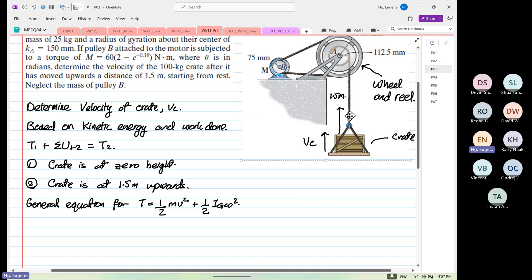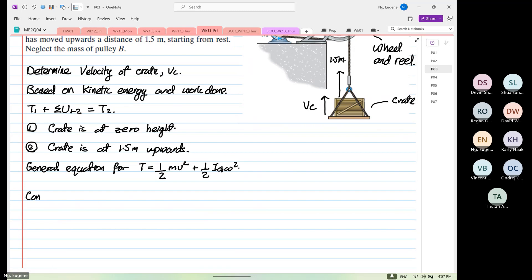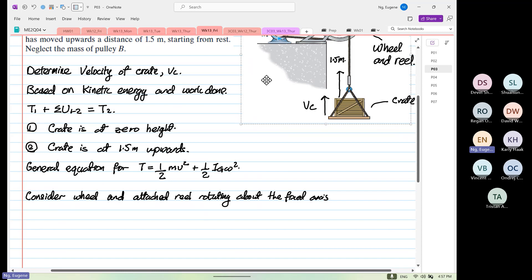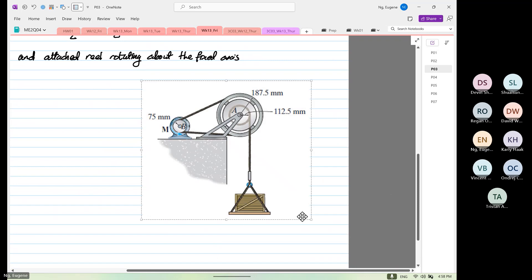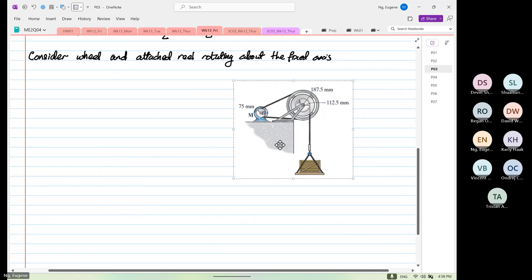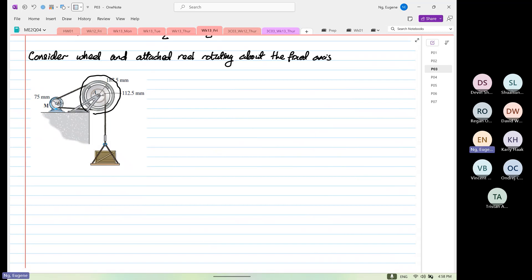So from here, let's consider the wheel and the attached reel rotating about the fixed axis. So we are going to focus on the wheel and the reel. So where we are focusing, we are focusing this part of our system first. We focus this part of the system first.